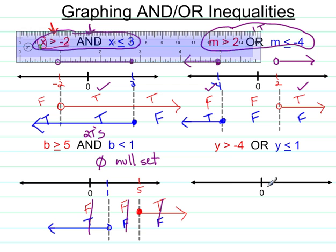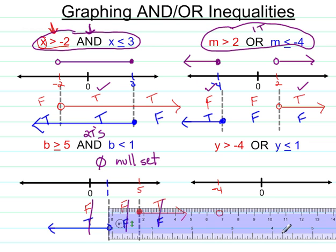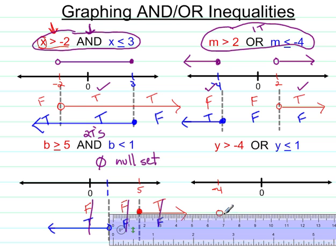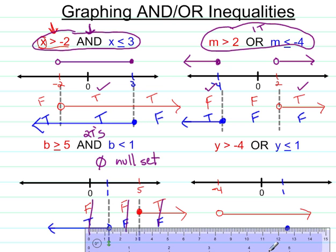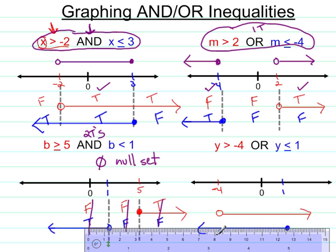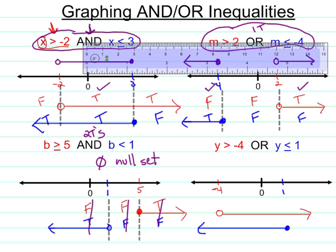Move my ruler out of the way and do the last example. So if you notice here, we're going to graph negative four. We need the numbers bigger than negative four. So they are starting at negative four and not including it, hence the open dot.